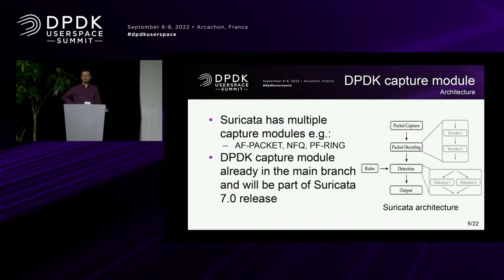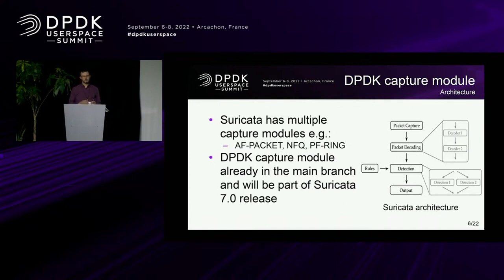Suricata itself has multiple modules. As you can see on the right-hand image, you have a packet capture module and an output module. For DPDK, the most interesting module is the packet capture module. It already contained a few modules like AF packet, NFQ, PF ring, and some others as well. As part of my master's thesis, I implemented the DPDK capture module. It's already been merged in the main branch, and will already be part of the Suricata 7.0 release, which is due soon. Suricata can already be compiled with this capture module.